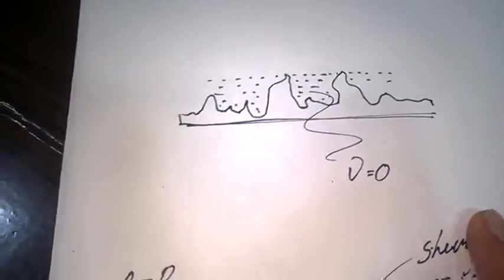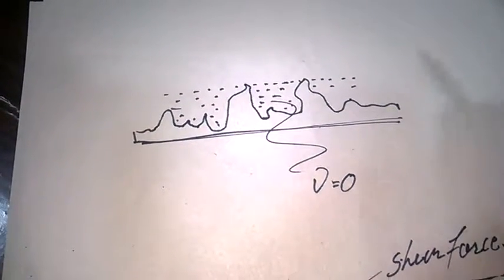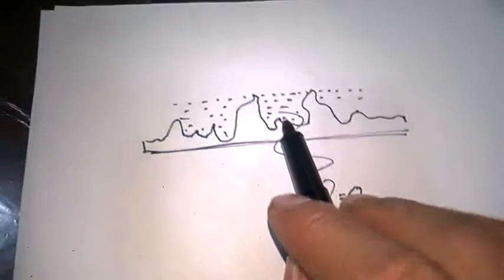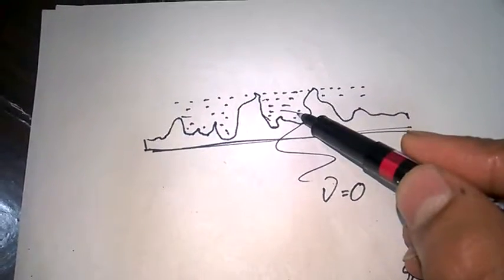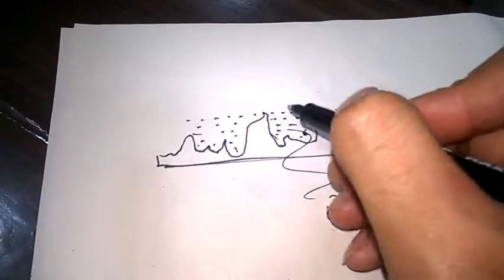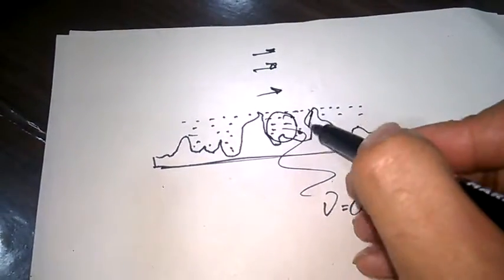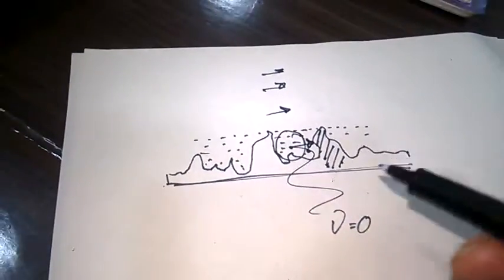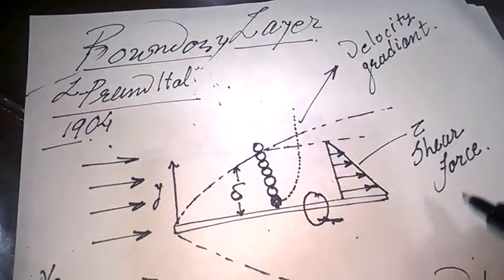Any surface actually has hills and valleys — peaks and valleys — due to surface unevenness. Because of this, the fluid gets trapped in between these peaks, putting it in a stagnation mode. Its velocity is zero because the fluid cannot flow through this resistance, so velocity v equals zero at this point.